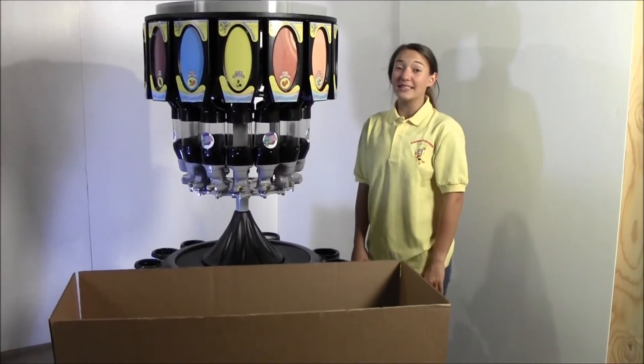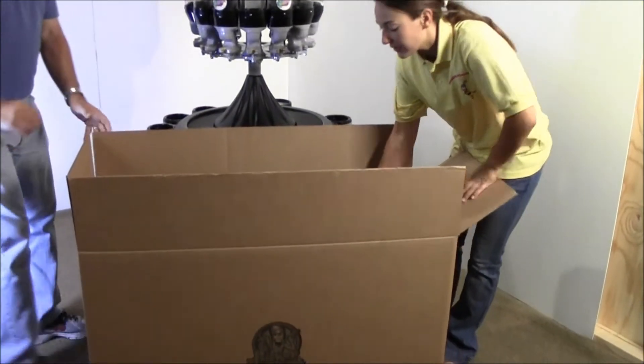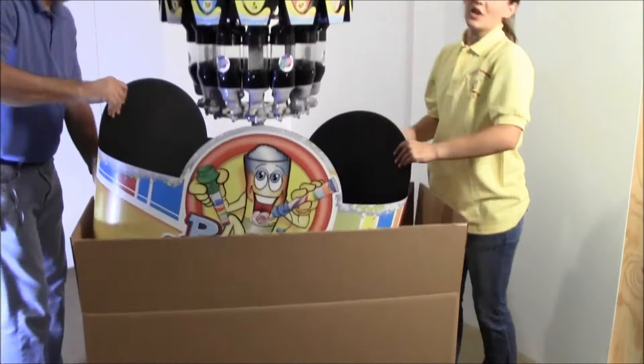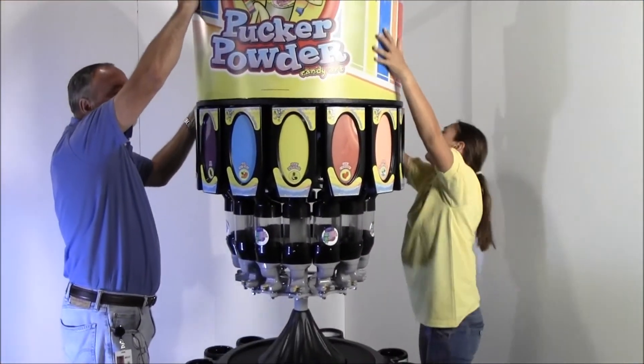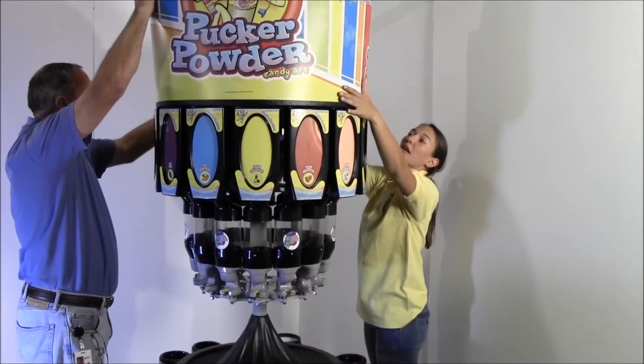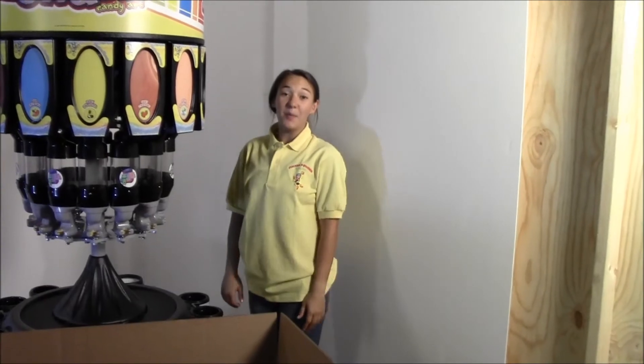Your header is going to come in a separate box. Once you get the header, all you need to do is open the box, remove the header and place it on top of the machine. And this is how you put on the header.